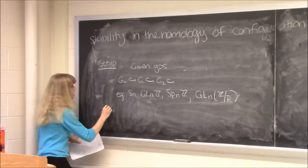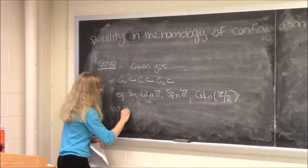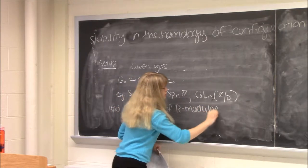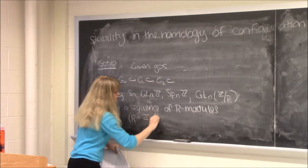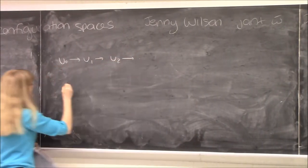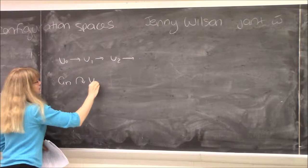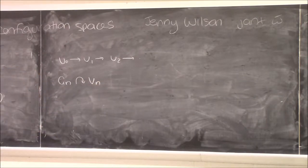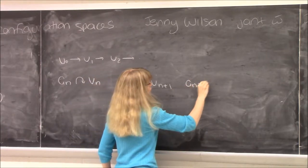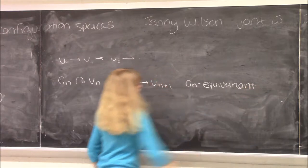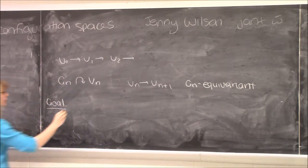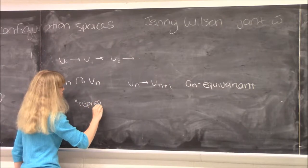Additionally, a sequence of representations of these groups — a sequence of R-modules where in most cases the coefficients are going to be either the integers or the rational numbers. So a sequence of R-modules V₀, V₁, V₂, etc., so that the nth term comes with an action of the nth group in such a way that these inclusions are compatible. The goal is to prove stability results for these sequences of representations — broadly under the umbrella term representation stability.